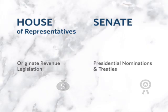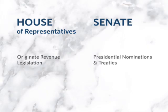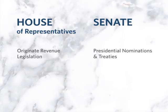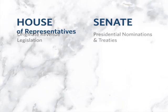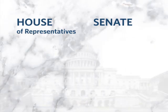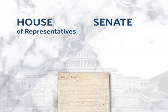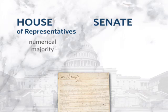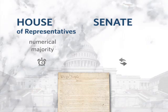Because each chamber has the constitutional authority to make its own rules, the House and Senate have developed some very different ways of processing legislation, perhaps partially flowing from their constitutional differences. In general, House rules and practices allow a numerical majority to process legislation relatively quickly. Senate rules and procedures, on the other hand, favor deliberation over quick action, as they provide significant procedural leverage to individual senators.